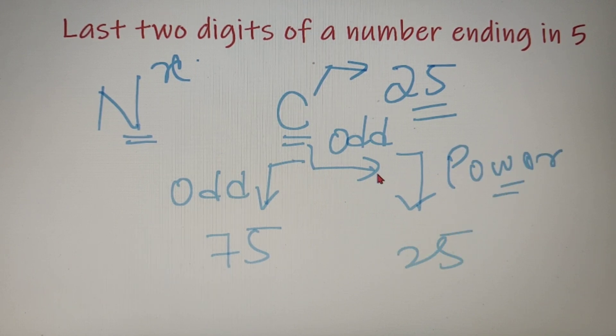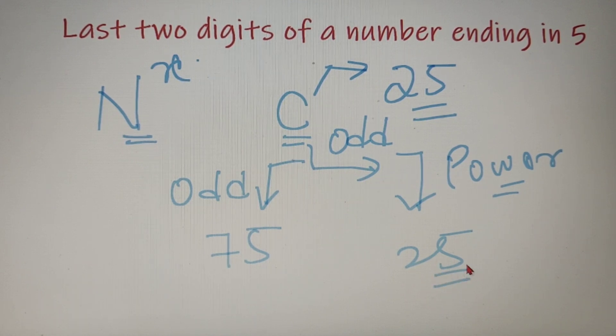So when the second last digit is odd and the power is even, the last two digits will always be 25. Now let's solve some examples so that this concept will be much clearer to you.